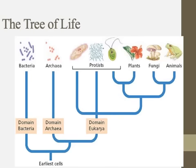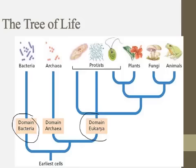We can look at this another way through a cladogram showing the breakdown. The bacterial domain contains only bacteria, the archaea domain contains only archaea, and the eukaryotic domain contains the other four kingdoms.